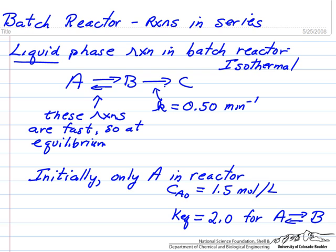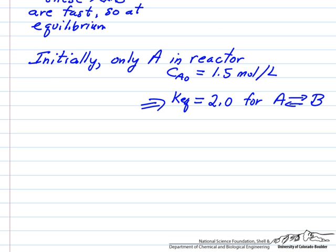So the ratio of A to B is going to be determined by equilibrium. We're given the equilibrium constant here, and we're given that initially we start out with only A in the reactor, and the concentration of A is 1.5 moles per liter.